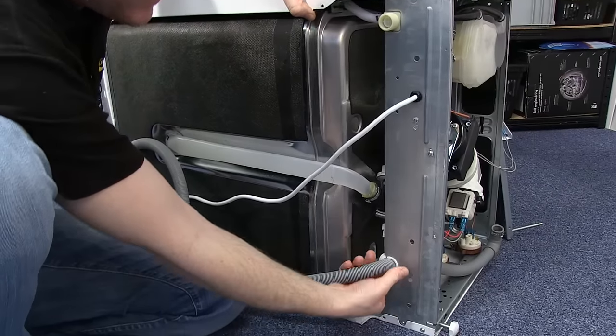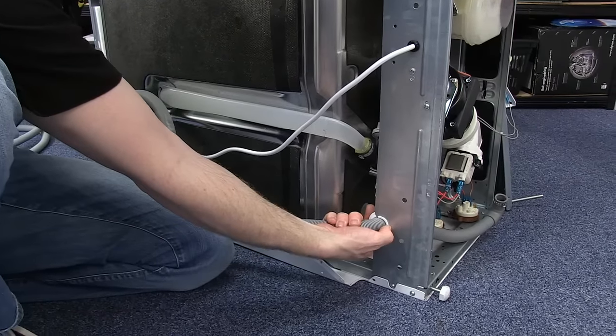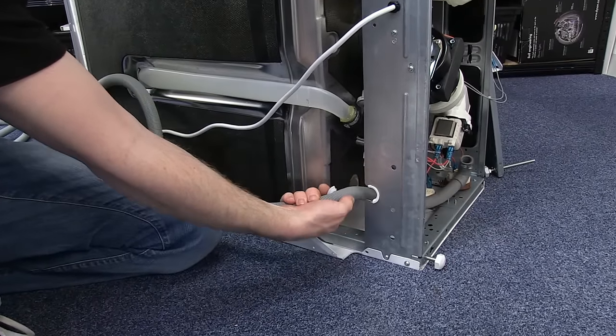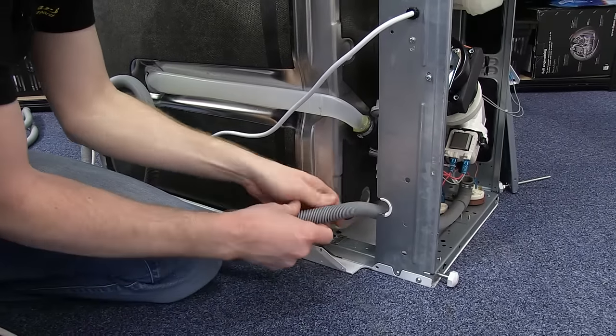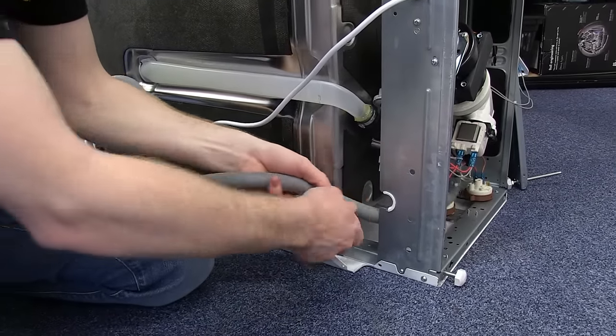Now the only thing I need to do is to remove the grommet that holds the hose into place, which separates as you can see, and pull the drain hose out.